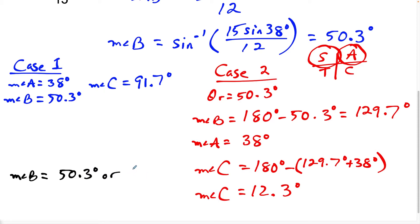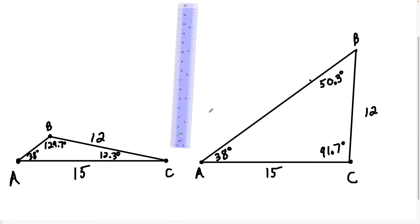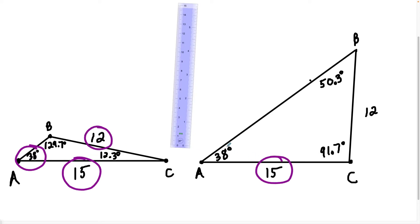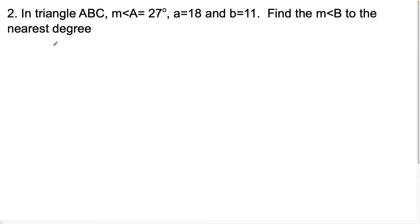So the measure of angle B is either 50.3 degrees or 129.7 degrees. Looking at these two triangles, both have the same angle-side-side combination of 38 degrees, 15 units, and 12 units, yet it's clearly obvious from the drawings that the two triangles are not congruent — which is exactly why we have to explore the possibility of a second triangle.